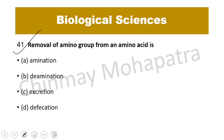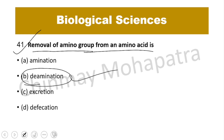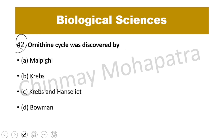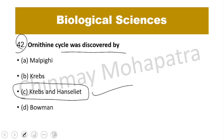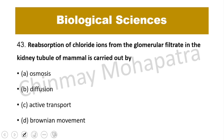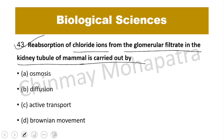Question number 41: Removal of an amino group from an amino acid is called deamination. Question number 42: The ornithine cycle was discovered by Krebs and Henseleit. Question number 43: Reabsorption of chloride ions from glomerular filtrate in the kidney tubule of mammals is carried out by diffusion.